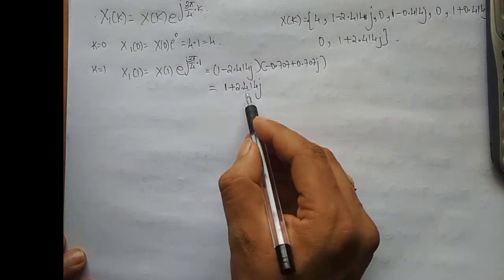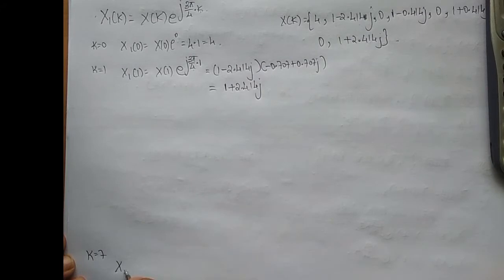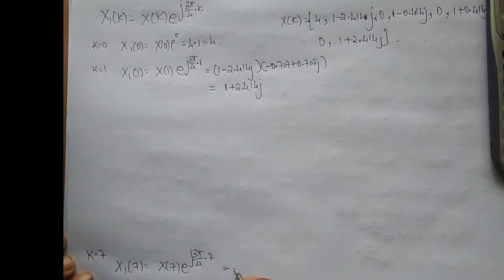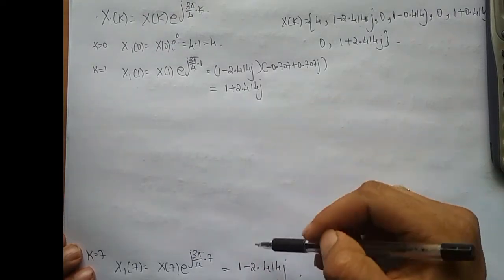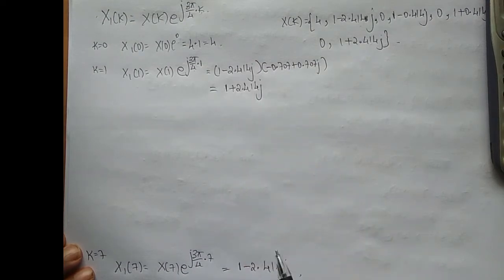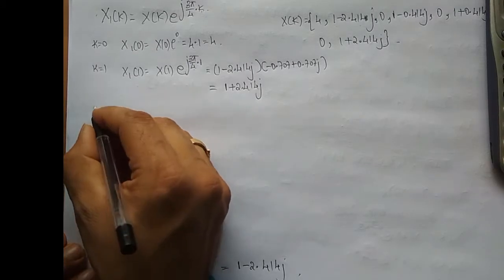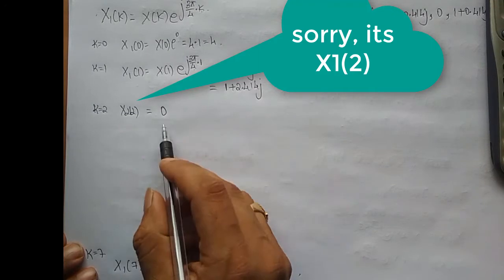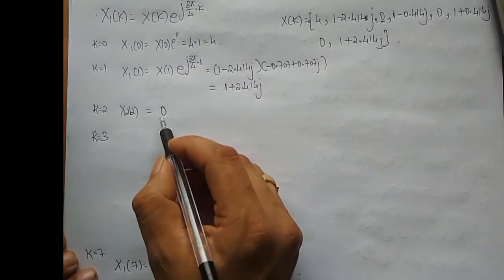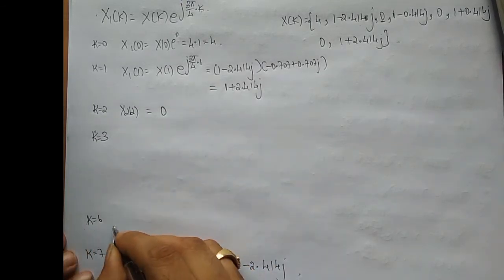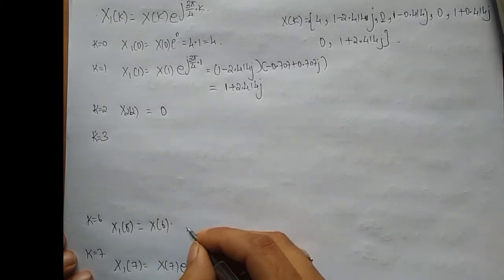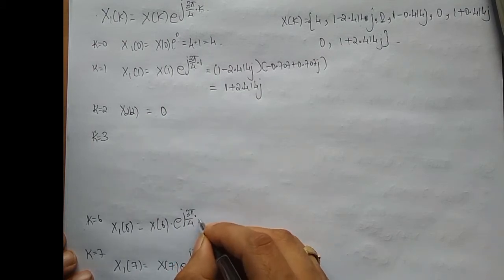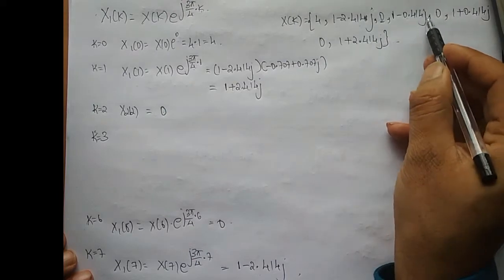So X1[1] = 1 + 2.414j. For k = 7, by complex conjugate symmetry, X1[7] = X[7] · e^(j3π/4·7) which is the complex conjugate of X1[1], giving 1 - 2.414j. Note: you can use conjugate symmetry only if you are confident in the previous answer. For k = 2: X1[2] = X[2] · e^(j3π/4·2) = 0, because X[2] = 0. Similarly for k = 6: X1[6] = X[6] · e^(j3π/4·6) = 0, because X[6] = 0.